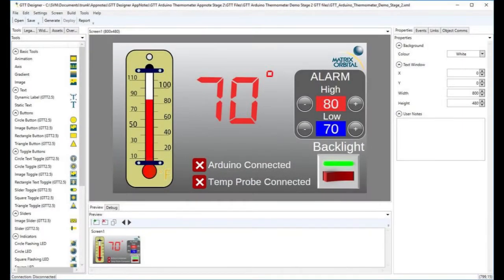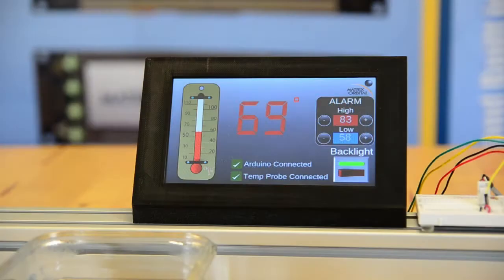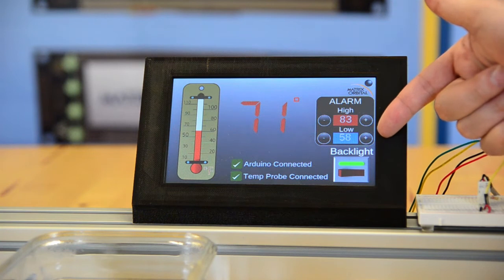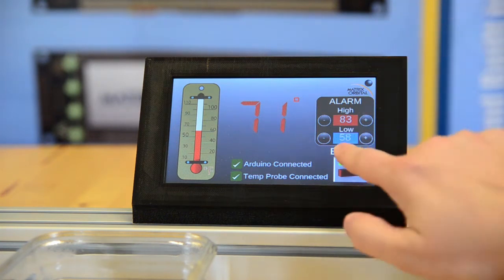Welcome to part two of the GTT Arduino Dallas one-wire temperature probe demo. What we've done here is added a high and low alert using the onboard piezo buzzer, so you can see we can set the parameters.